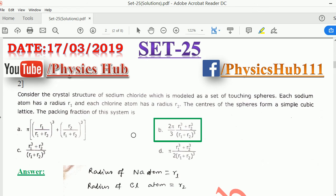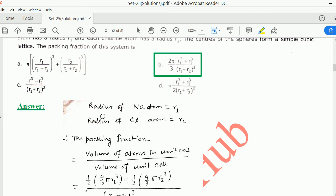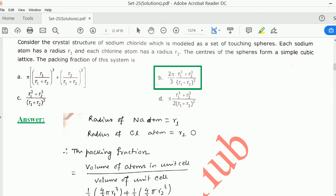Second question: consider the crystal structure of sodium chloride which is modeled as a set of touching spheres. Each sodium atom has radius r1 and each chlorine atom has radius r2. The centers of the spheres form a simple cubic lattice. The packing fraction of this system is: